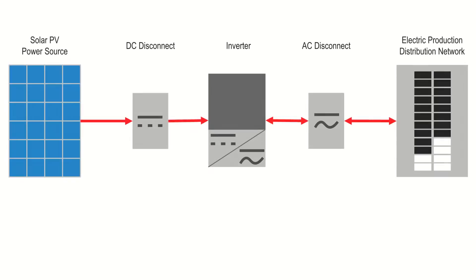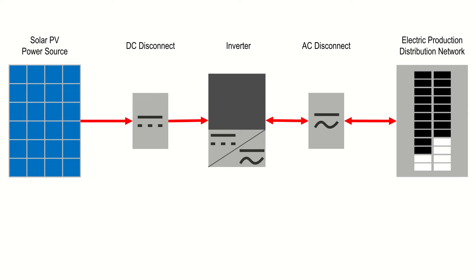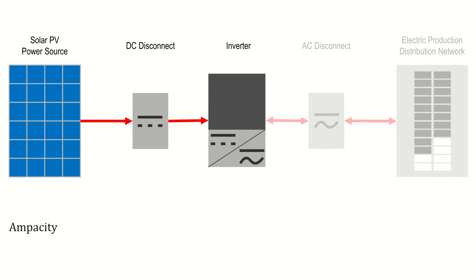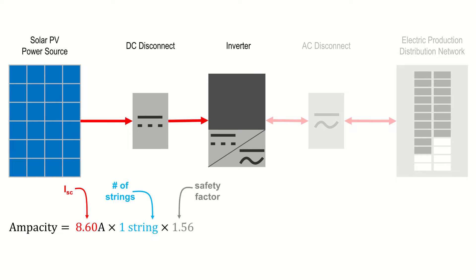In the case of a fusible disconnect, the fuse size that you select will depend on how much current is being carried by each set of conductors coming from the solar array and whether or not you've used a combiner ahead of the disconnect. The circuit ampacity will be based on the maximum electrical current, which when working on the DC side of the circuit is equal to the short circuit current ISC of each string in the array. In this case, we'll multiply the short circuit current ISC times the number of strings in the array times the safety factor of 1.56. The safety factor of 1.56 incorporates two separate factors based on the NEC: one factor to account for the continuous current of a circuit, and another providing a cushion against nuisance trips. You'll then select the closest fuse size at or just above this ampacity value as required by the NEC.